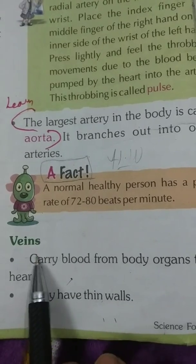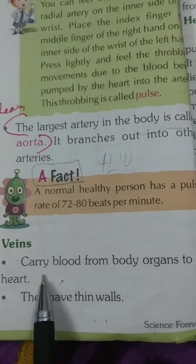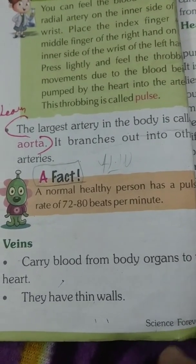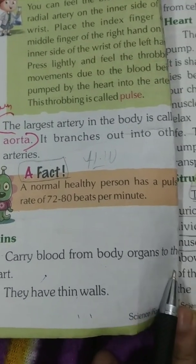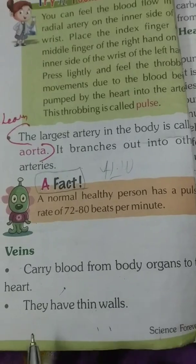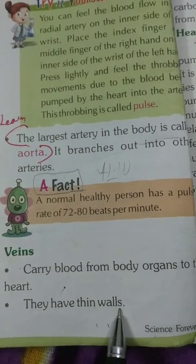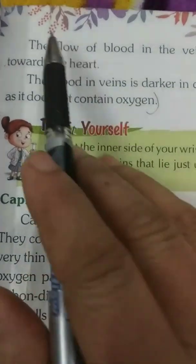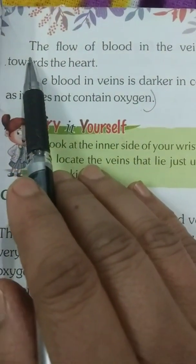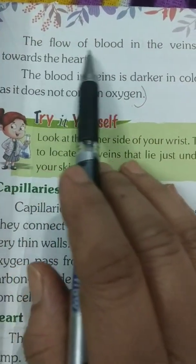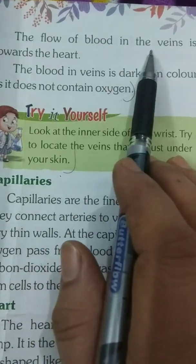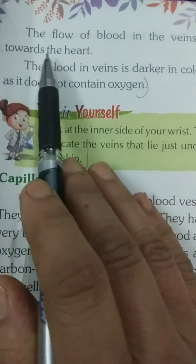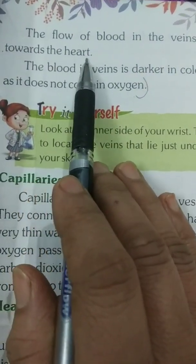Veins carry blood from body organs to the heart. They have thin walls. The flow of blood in the veins is towards the heart.